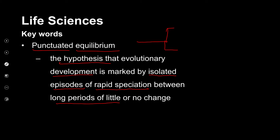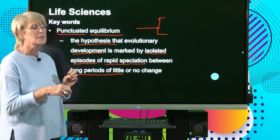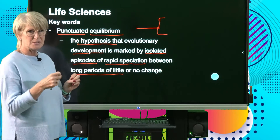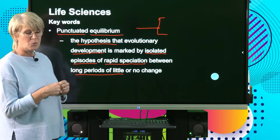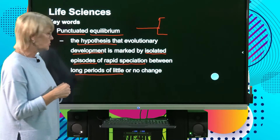Basically, punctuated equilibrium describes long periods of time that are punctuated or broken by shorter periods where rapid change occurs, and that's where we see organisms changing.